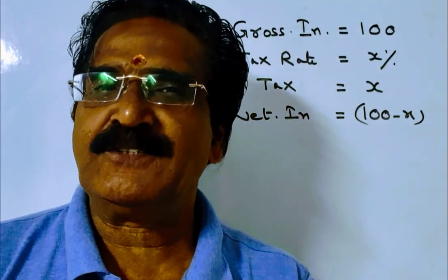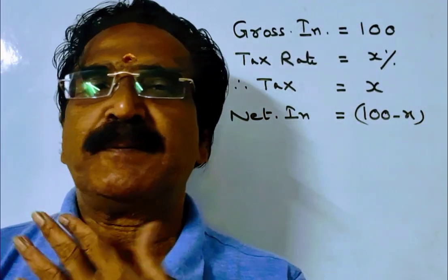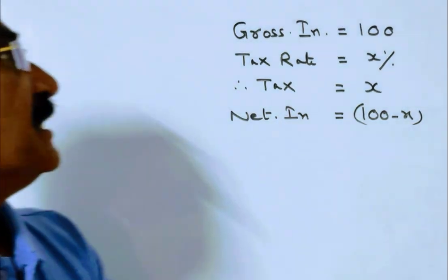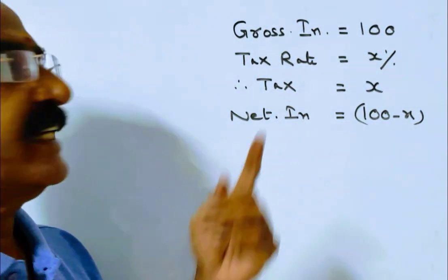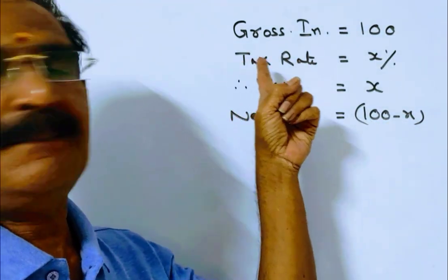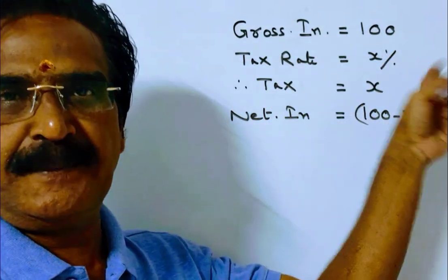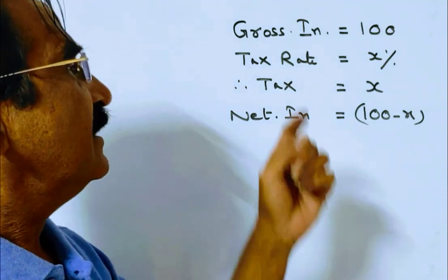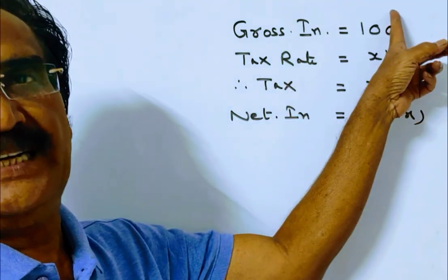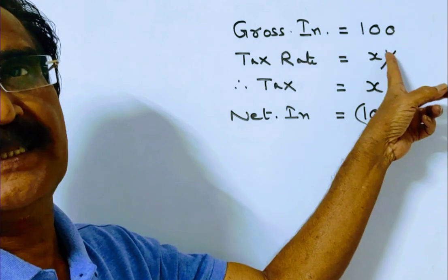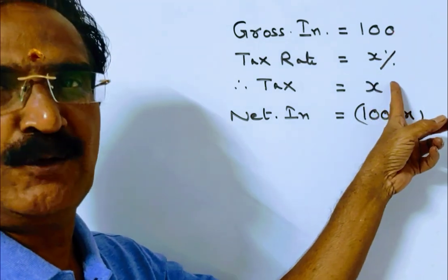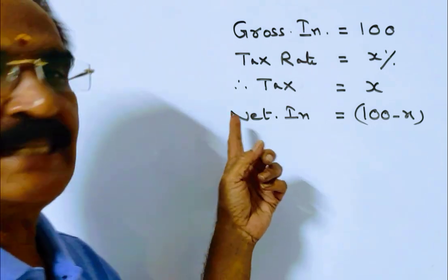Hi friends, good morning. Please look at the next problem in percentage. Say gross income is 100 rupees and income tax rate is x percent, then the tax will be x percent of 100, which means x divided by 100 into 100, that is equal to x rupees.